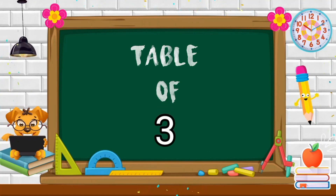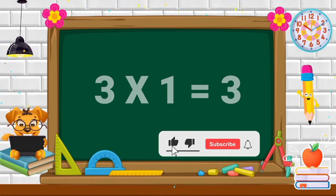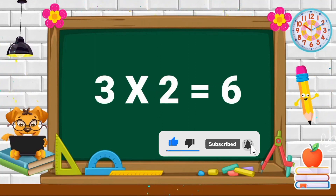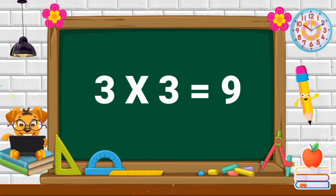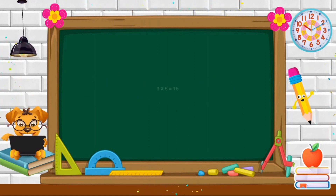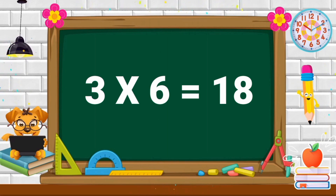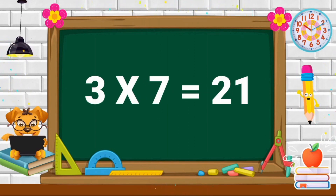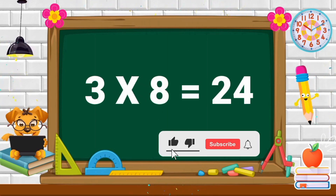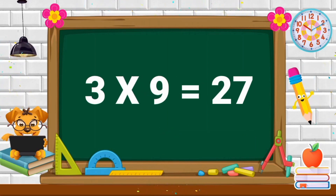Table of Three. Three ones are three. Three twos are six. Three threes are nine. Three fours are twelve. Three fives are fifteen. Three sixes are eighteen. Three sevens are twenty-one. Three eights are twenty-four. Three nines are twenty-seven.